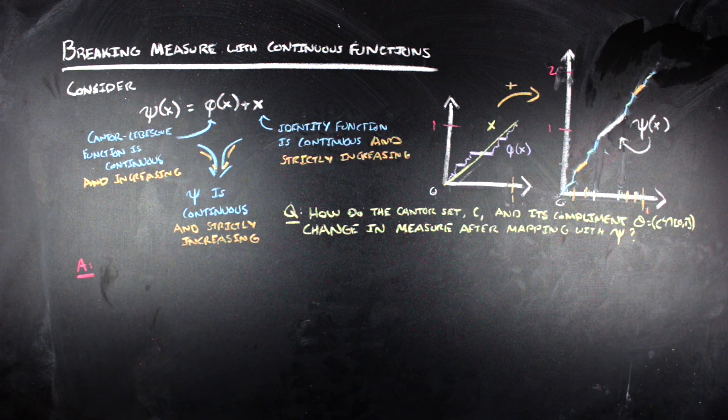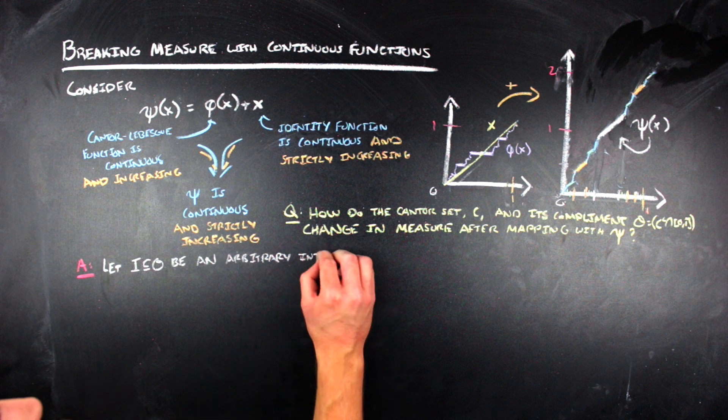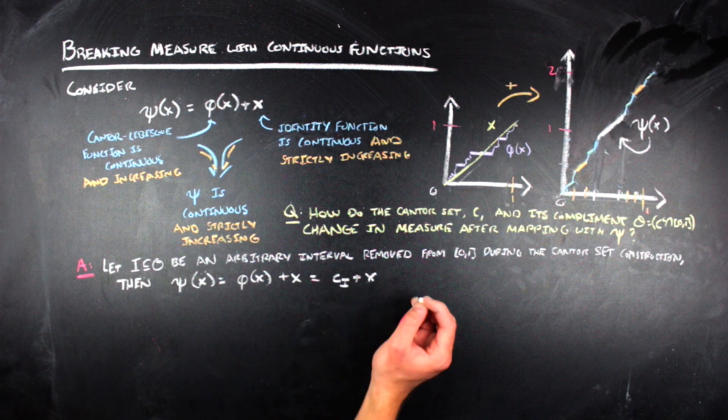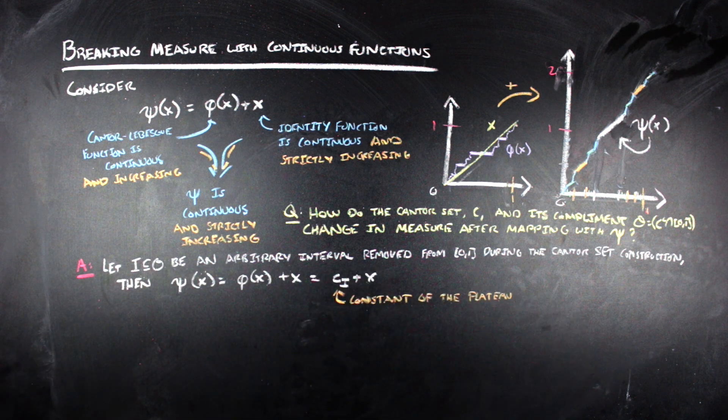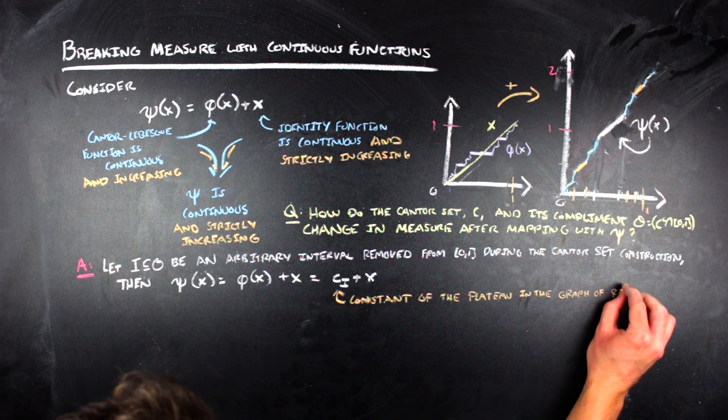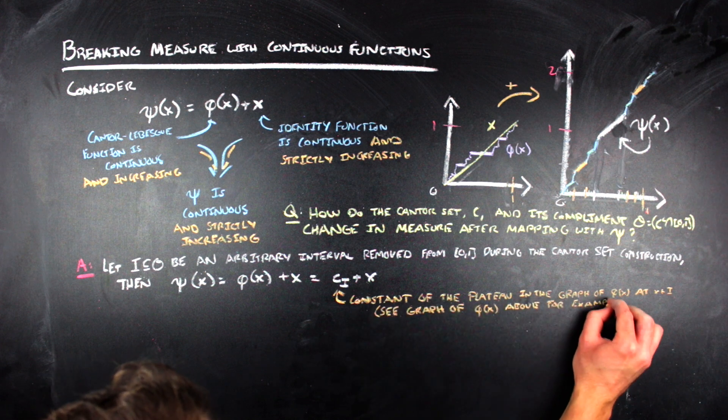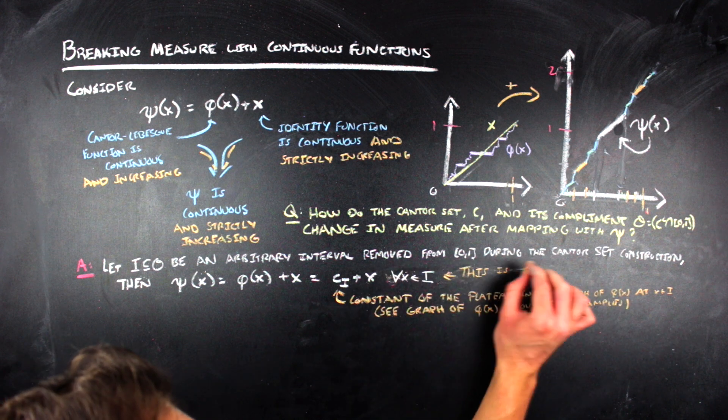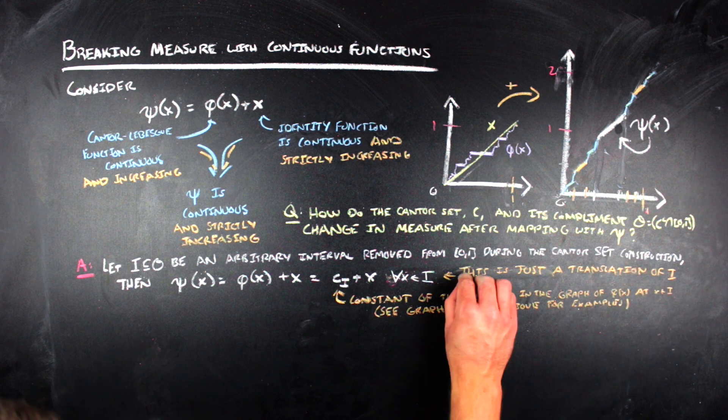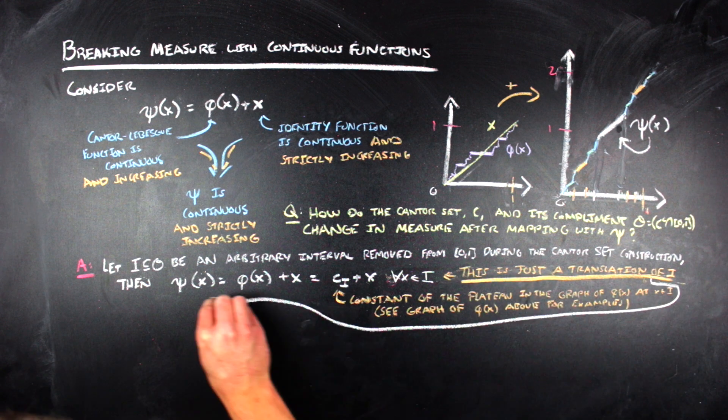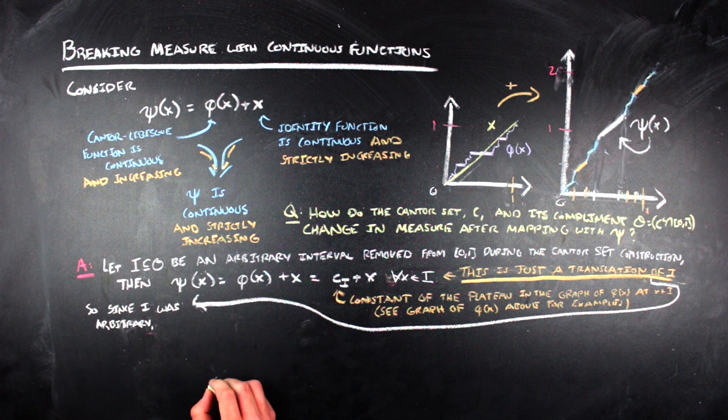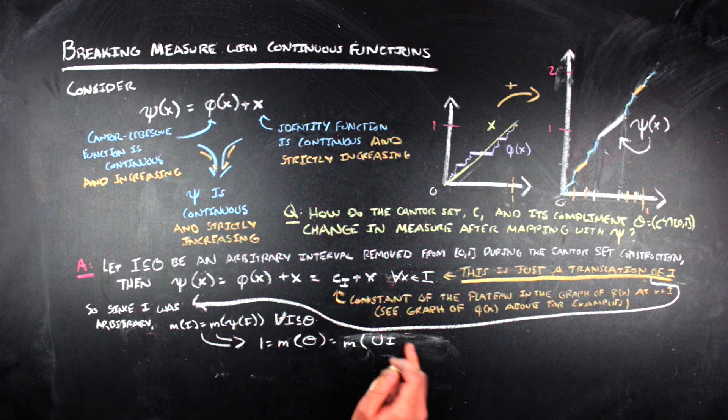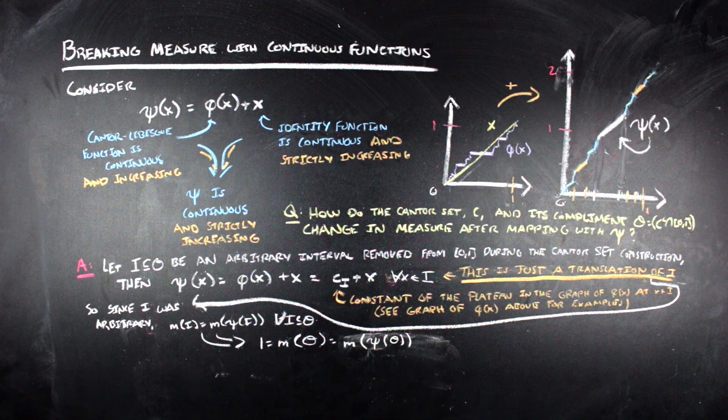First notice that for any open interval that's removed from the Cantor set construction, a point x in that interval is sent to itself plus a constant related to the plateau of that interval in question in the graph of the Cantor-Lebesgue function. So the measure of the interval before and after applying this psi function is the same since the interval is just a translation of itself by a constant term. This argument applies for every single interval removed during the Cantor set construction process. So we can say the measure of the image of the complement of the Cantor set is 1.